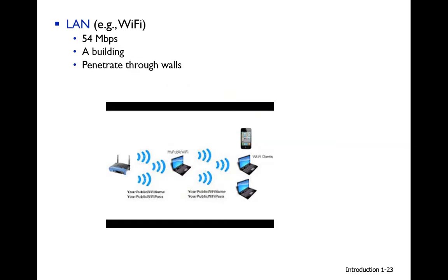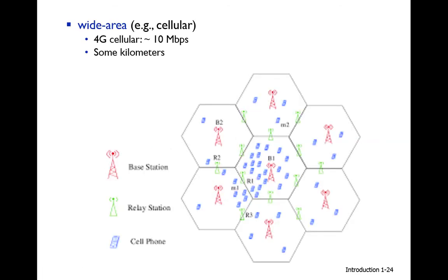Wi-Fi networks, also called wireless LAN, can support data rates up to 54 Mbps. They can be used within a building and the signal can penetrate and pass through walls. Multiple devices such as laptops and mobile phones connect to a wireless router. The Wi-Fi signal can cover distances of more than a few meters within a building.